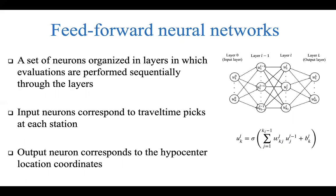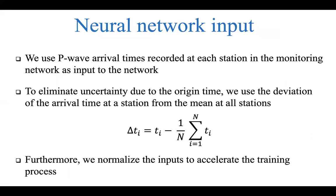Just to make sure all viewers are on the same page: a feed-forward neural network is a set of neurons organized in layers in which evaluations are performed sequentially. At the input, we have neurons corresponding to the number of stations in the monitoring network. At the output, we have neurons for the hypocenter location coordinates — for a 3D problem, three neurons for x, y, and z. Importantly, we do not feed the observed travel times directly; rather, we subtract them from the mean observed travel times across all stations to eliminate uncertainty due to unknown origin time, and we normalize these inputs to accelerate training.